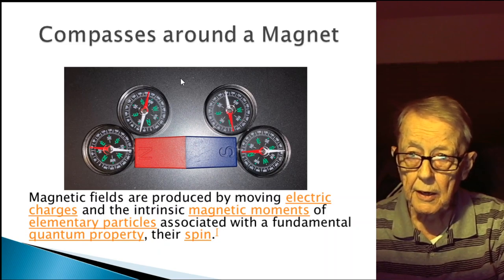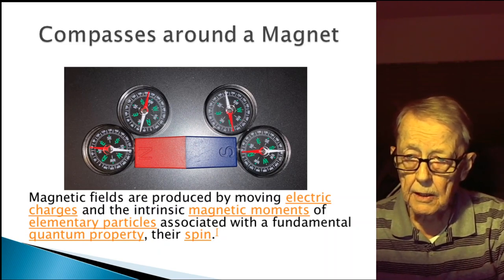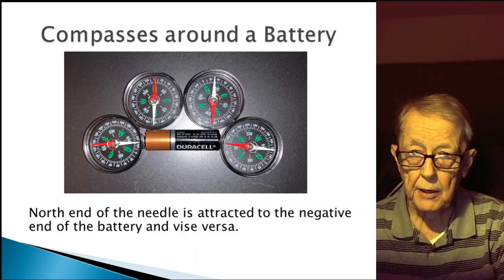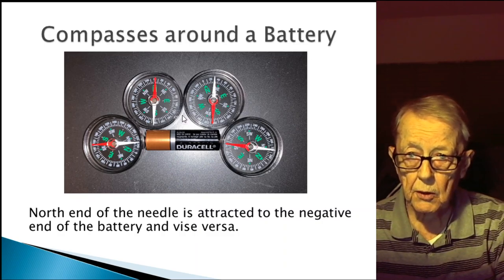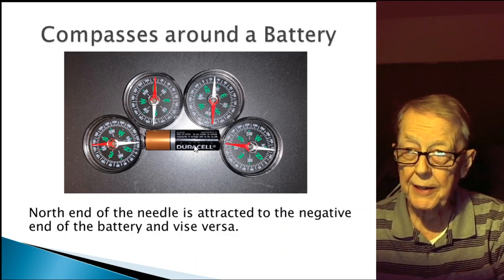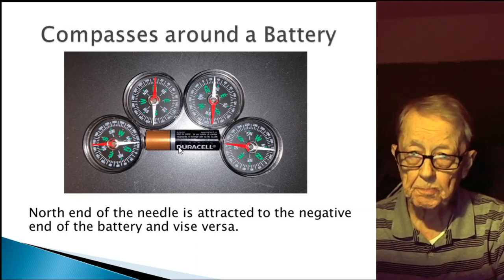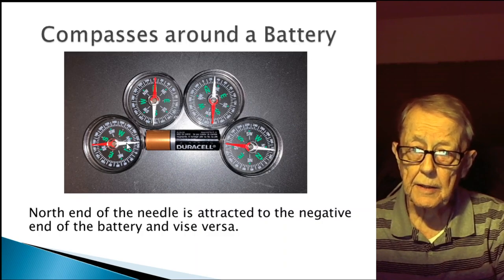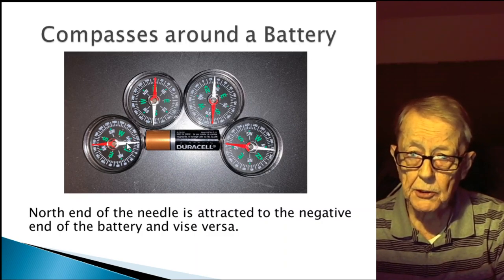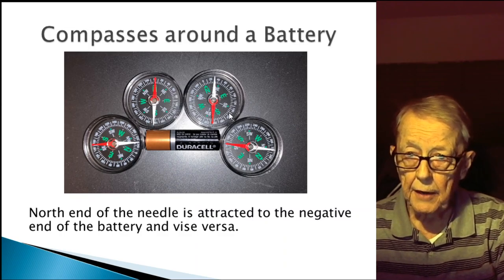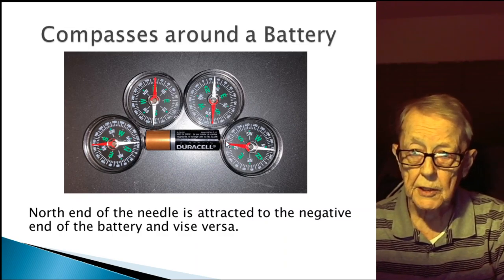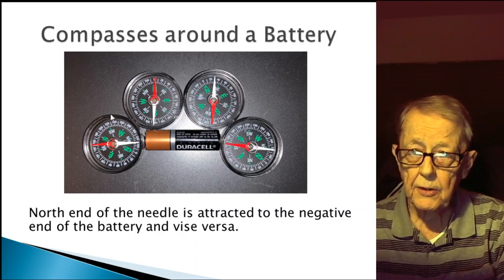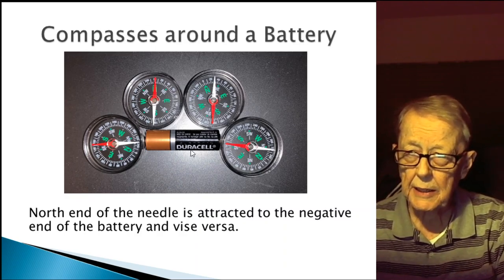I did the same experiment with a battery and got an almost identical picture. I should have moved it down a little so the compasses would have been pointing exactly the same way as around the magnet — but it's close enough. In this case, the south end of the compass needle points to the positive terminal, and the north end points towards the negative of the battery. As you move it around, you'll see the compass change — it changes oddly, but it changes.